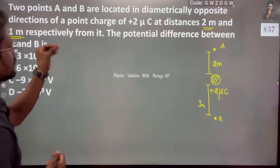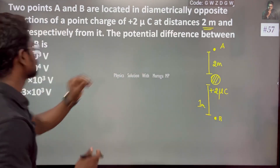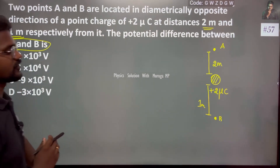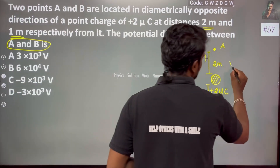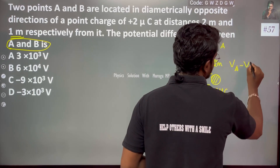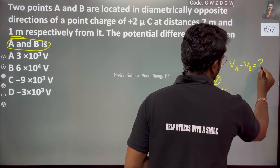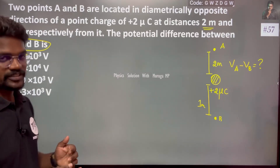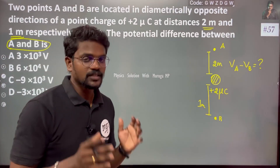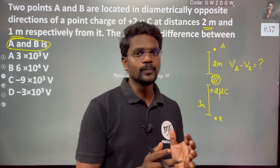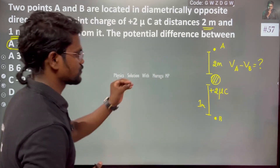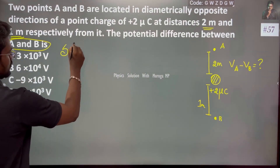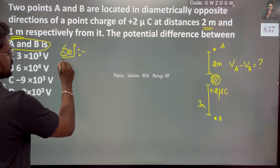We need to find the potential difference between A and B, that is VA minus VB. Let us jump to the solution part — it is a very simple question.